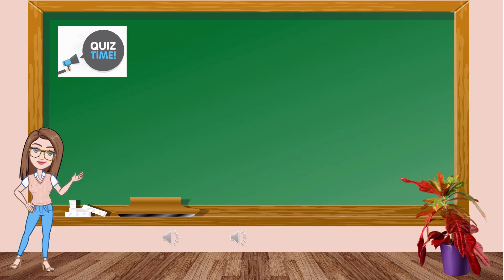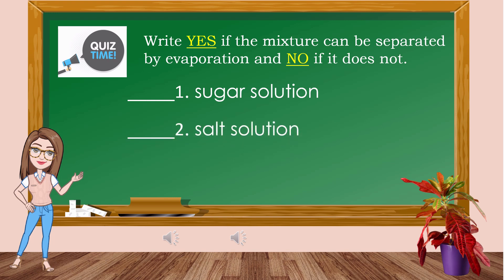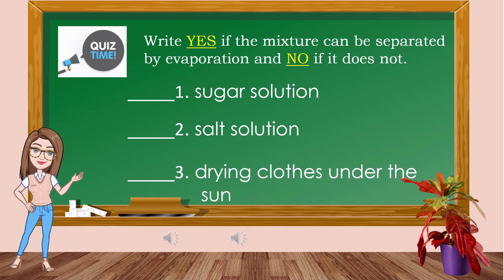Let's proceed to the last quiz. Write Y if the mixture can be separated by evaporation and N if it cannot. Number 1: Sugar solution. Number 2: Salt solution. Number 3: Drying clothes under the sun. The answer for number 1 is yes, number 2 is yes, and number 3 is yes.